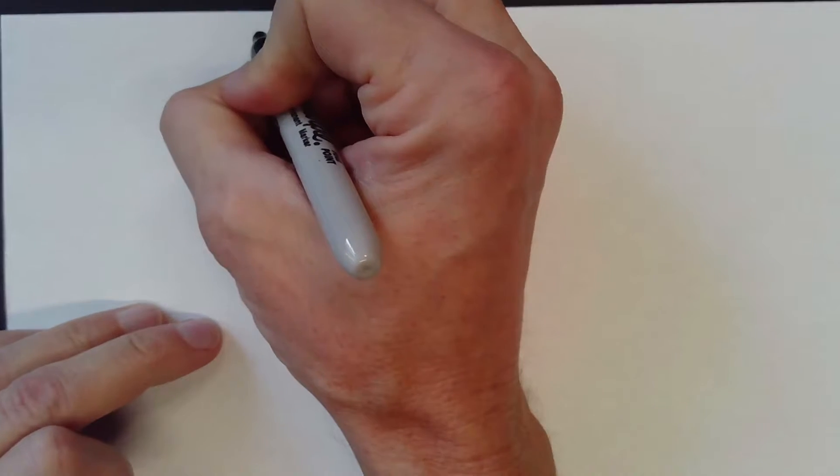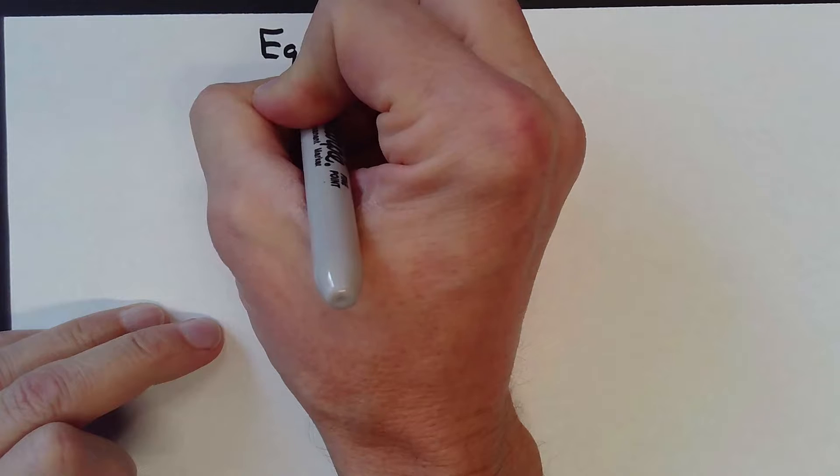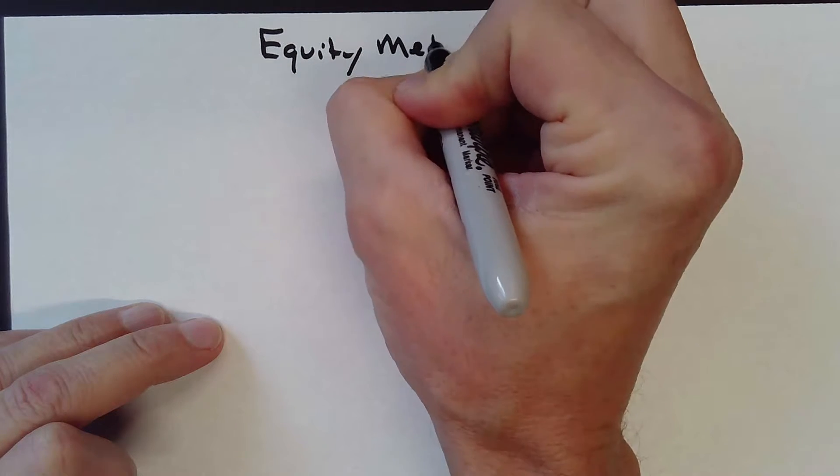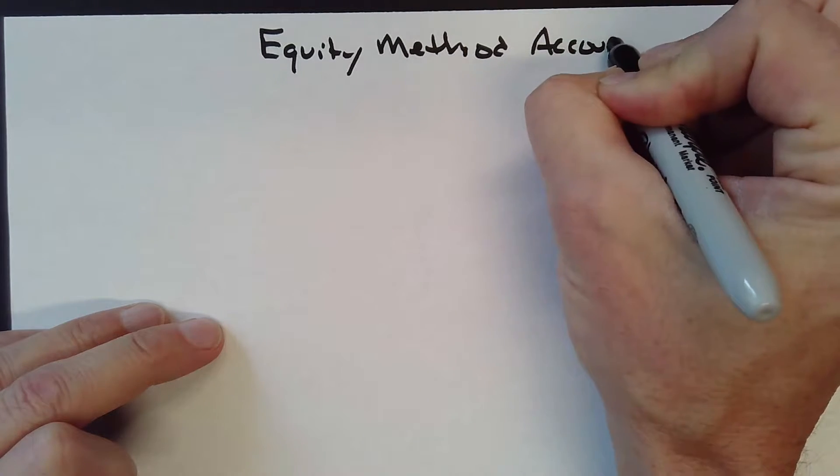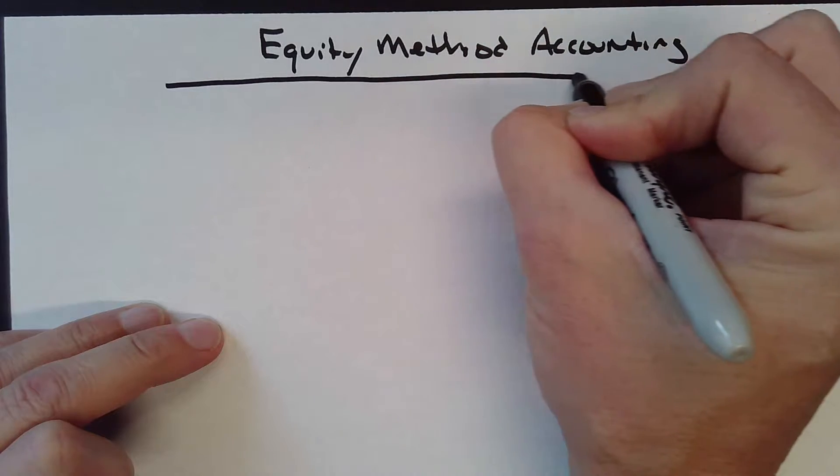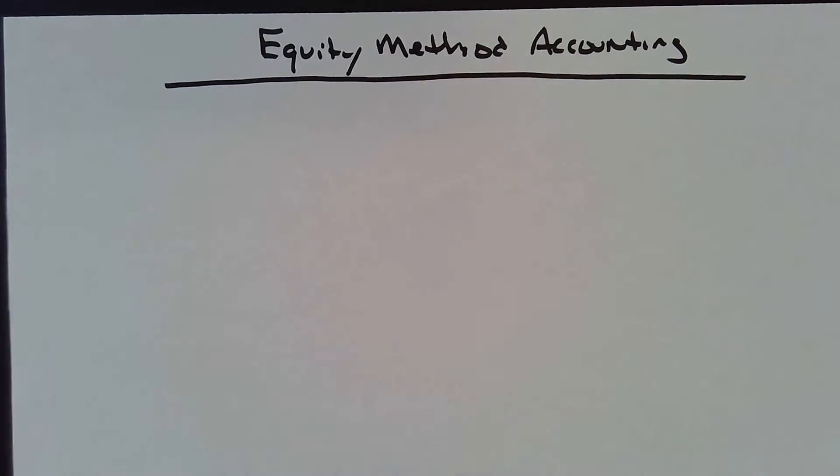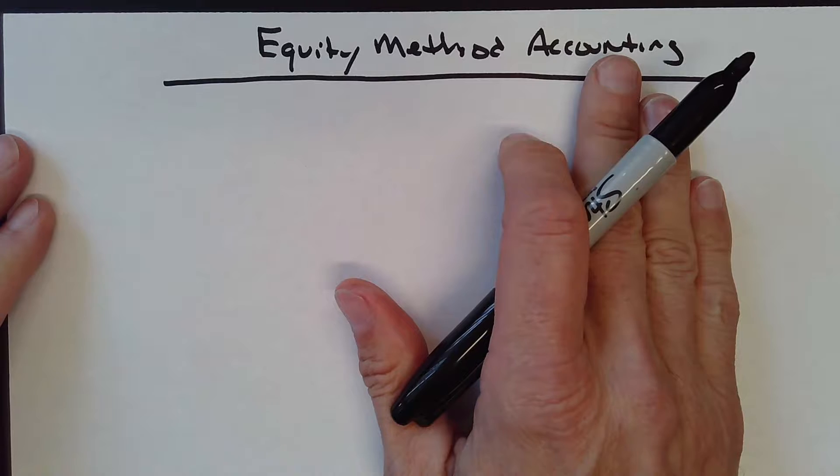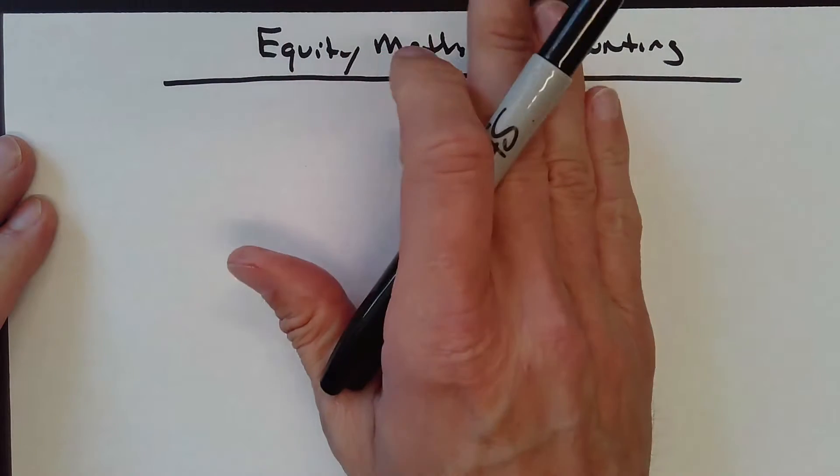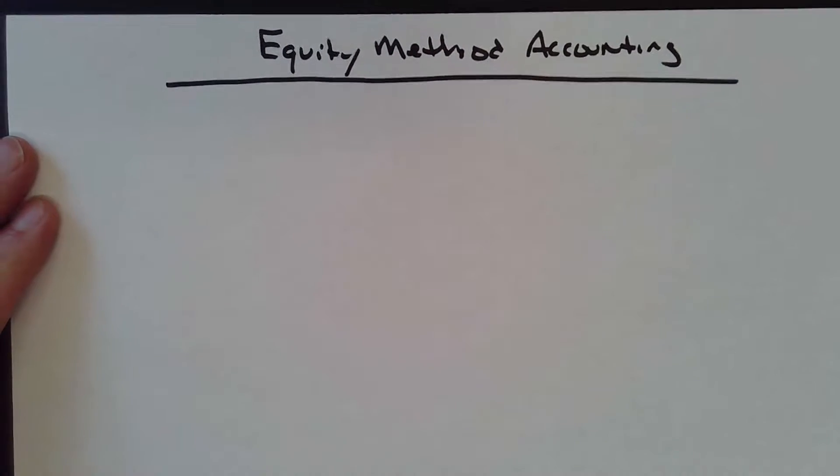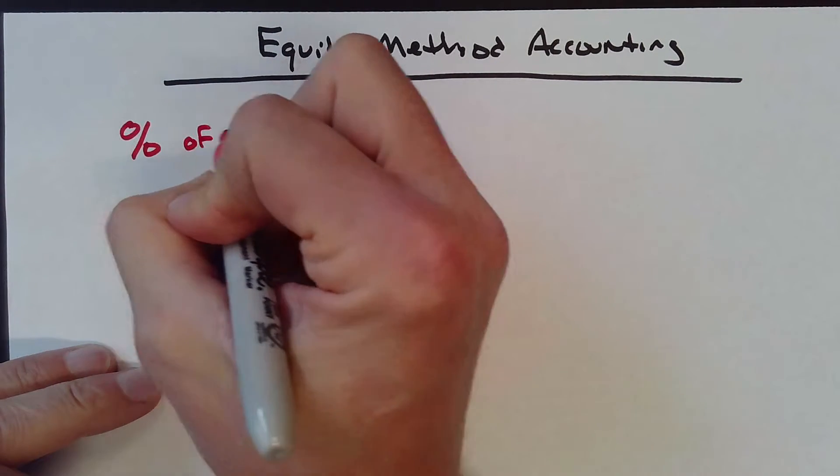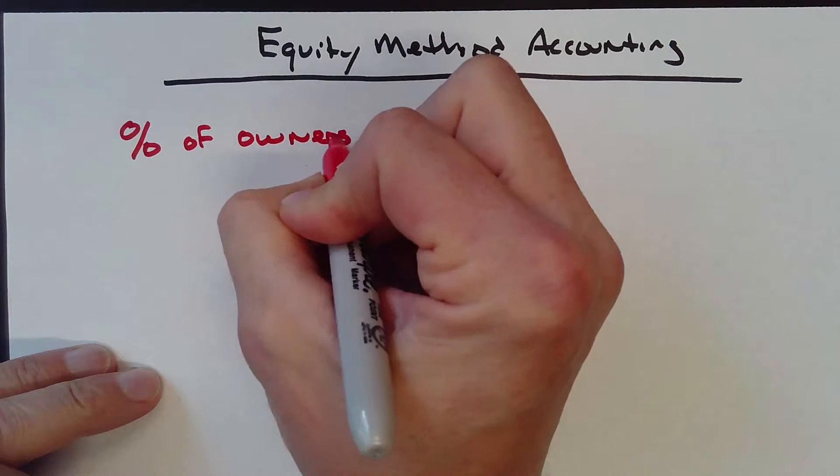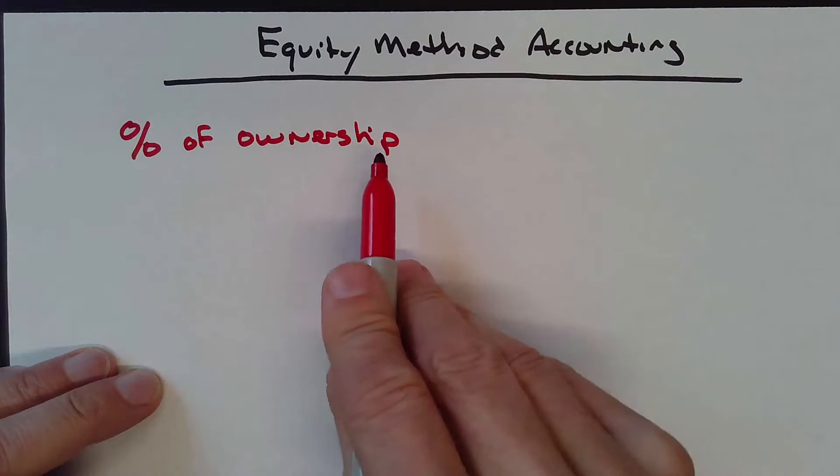So let's talk about equity method accounting. Equity method accounting is simply whatever percentage I own of the company. I look at the percentage that I own and take that percentage.